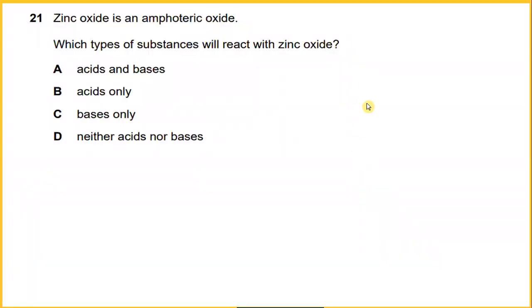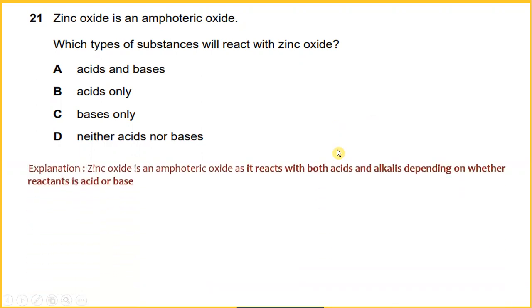Zinc oxide is an amphoteric oxide. Which types of substances will react with zinc oxide? Zinc oxide is an amphoteric oxide as it reacts with both acid and alkaline depending on whether the reactant is acid or base. The answer is A.